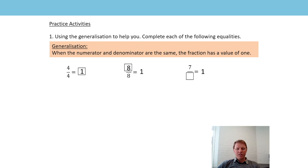And then the final one - this time we know the numerator. We don't know the denominator, but we do know that it's equal to one, which means the denominator must be the same value as the numerator, which is seven.